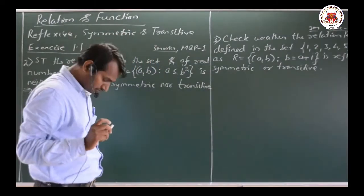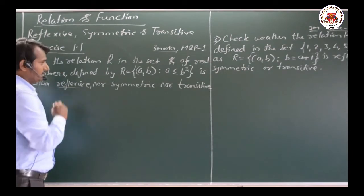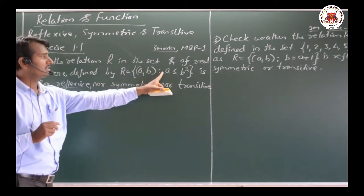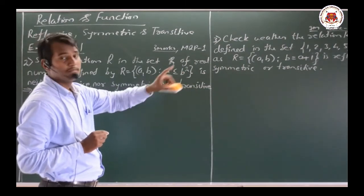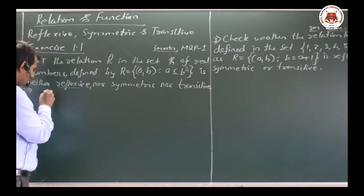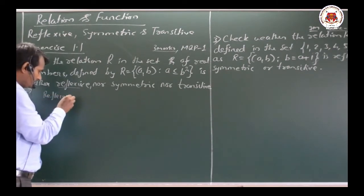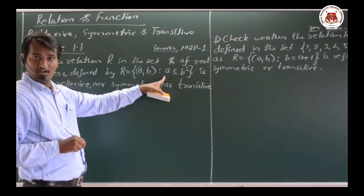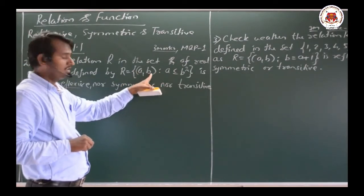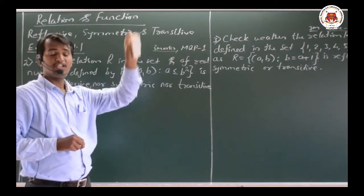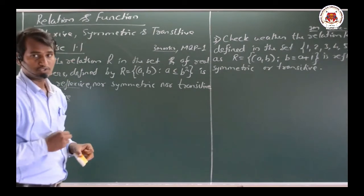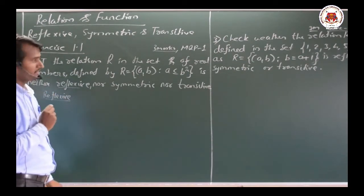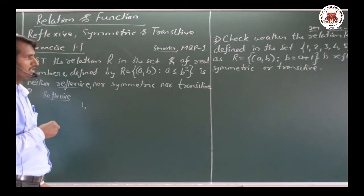Let us observe. Since the set of all real numbers has infinitely many elements, we cannot write it in roster form. Since we have to show it is not reflexive, we shall take a specific example. Let us take the pair (1/2, 1/2).